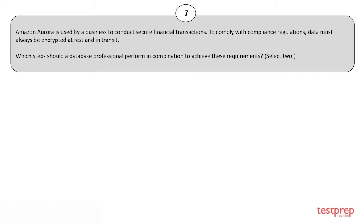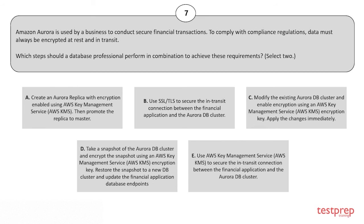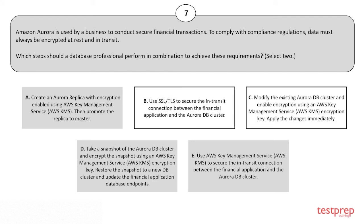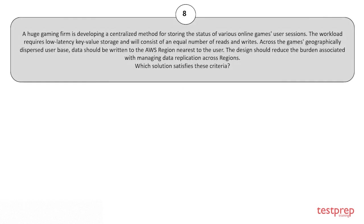Question 7: Amazon Aurora is used by a business to conduct secure financial transactions. Data must always be encrypted at rest and in transit. Which steps should a database professional perform in combination to achieve these requirements? Select two. Options: A) Create an Aurora replica with encryption enabled using AWS KMS, then promote the replica to master. B) Use SSL or TLS to secure the in-transit connection between the financial application and the Aurora DB cluster. C) Modify the existing Aurora DB cluster and enable encryption using an AWS KMS encryption key and apply changes immediately. D) Take a snapshot of the Aurora DB cluster, encrypt the snapshot using AWS KMS, restore to a new DB cluster, and update application endpoints. E) Use AWS KMS to secure the in-transit connection. The correct answers are options B and C.